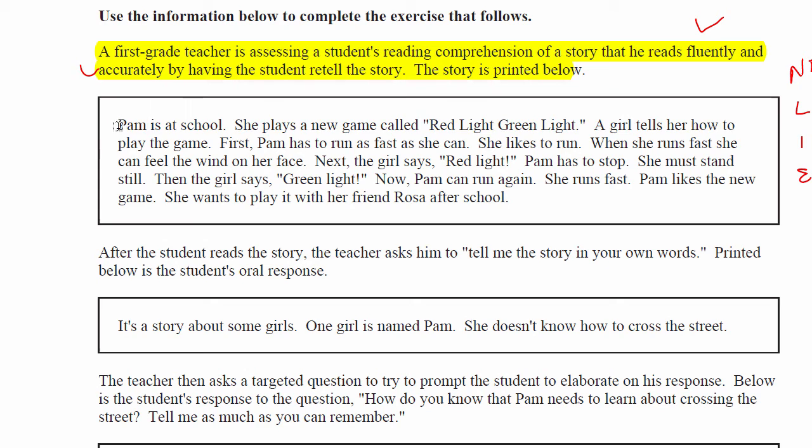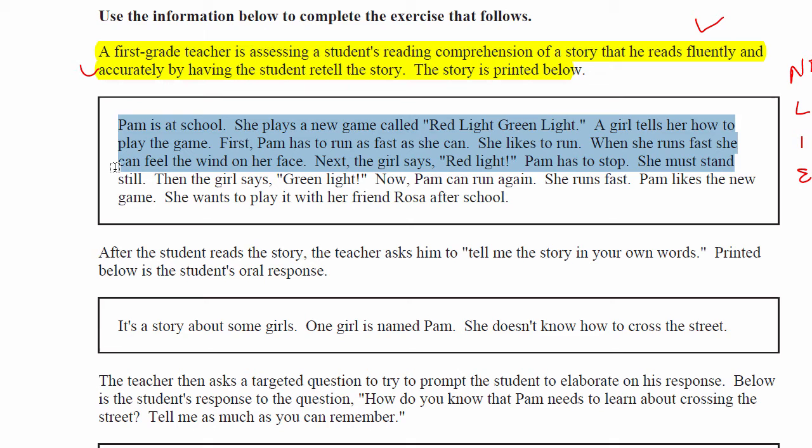This is the story itself: Pam is at school. She plays a new game called Red Light, Green Light. A girl tells her how to play the game. First, Pam has to run as fast as she can. She likes to run — when she runs fast, she can feel the wind on her face. Next, the girl says Red Light and Pam has to stop. She must stand very still. The girl says Green Light and now Pam can run again. Pam likes the new game and wants to play it with her friend Rosa after school.